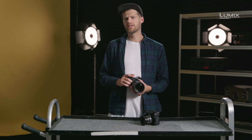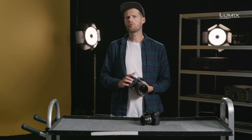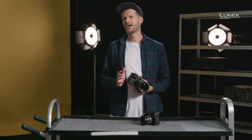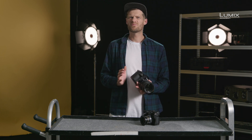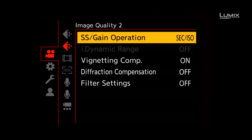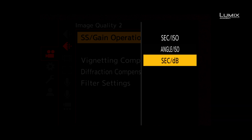Many filmmakers utilise the narrower shutter angles, such as 90 degrees or 45 degrees, for creative purposes to give the footage a more dramatic and realistic feeling. To activate the shutter angle in the S1H, simply go to the Image Quality 2 submenu on the Video Options and select Angle ISO. There is also an option to show ISO as gain values.